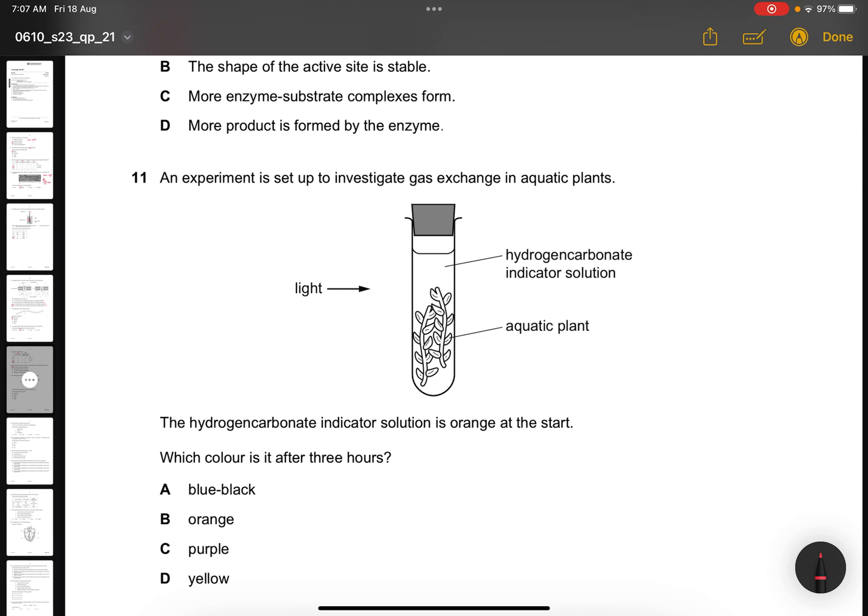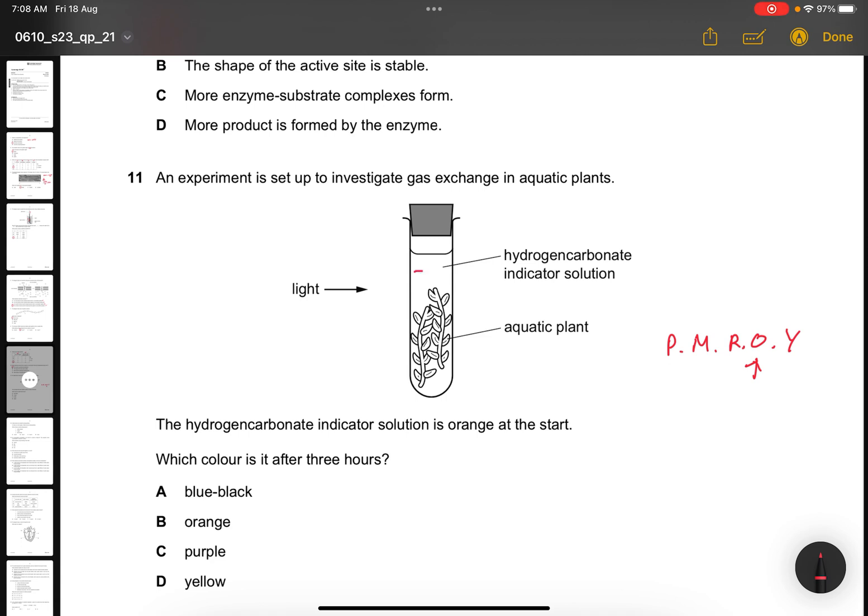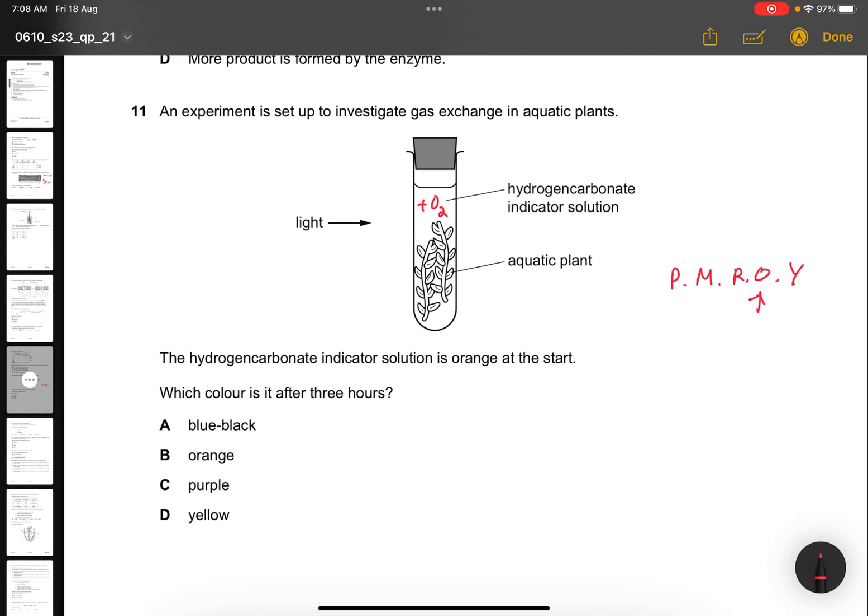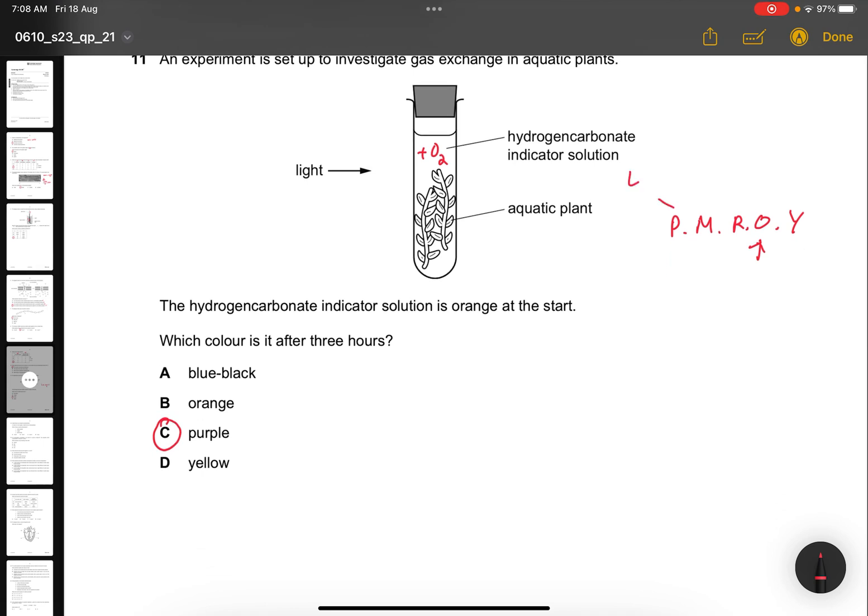Question 11. An experiment is set up to investigate gas exchange in aquatic plants. The hydrogen carbonate indicator is orange at the start. Which color is it after three hours? I always remember my PM ROY. We are now at orange. After three hours, there will be less carbon dioxide because the plants are photosynthesizing. Therefore, there will be more O2 and less CO2. Therefore, the color will change to purple. Because purple is the lowest CO2 concentration, and yellow is the highest CO2 concentration.